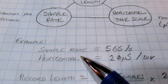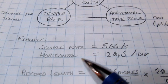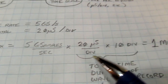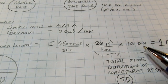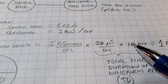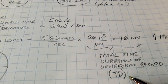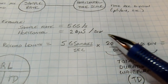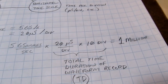Here's an example. At a sample rate of five gigasamples per second and a horizontal time scale of 20 microseconds per division, we figure out the record length as follows: 20 microseconds per division times ten divisions gives 200 microseconds of duration. 200 microseconds times five gigasamples per second gives one million sample points.